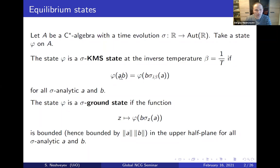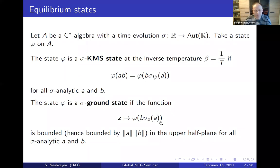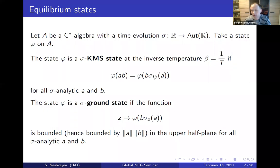KMS states satisfy a certain identity for all sigma-analytic elements. There is also a similar notion when t equals zero, or in other words when beta equals plus infinity — these are so-called ground states, defined as states such that the function defined in the upper half-plane is bounded. If you take KMS states at finite betas and let beta go to infinity, you get a ground state, but in general there are more ground states than those obtained from KMS states.